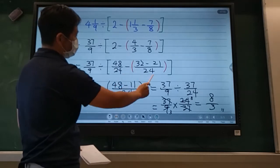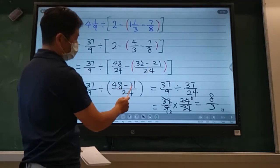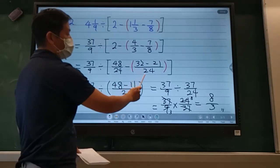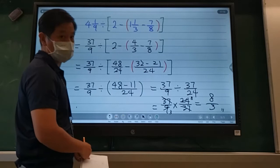So now we're going to combine these two because we're done with the bracket. So now we have 48 subtract 11 over 24. Keep in mind, you must keep the denominator unchanged.